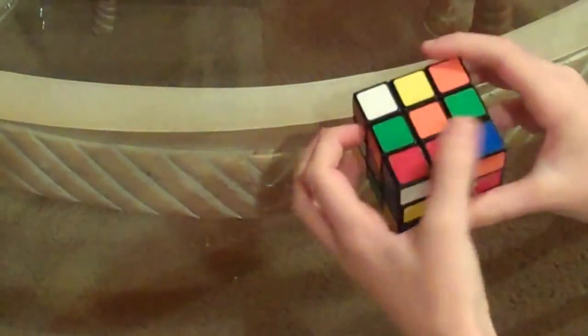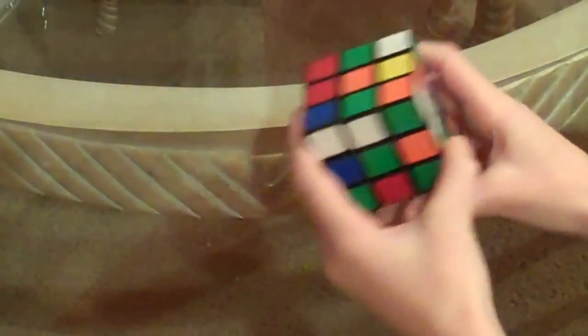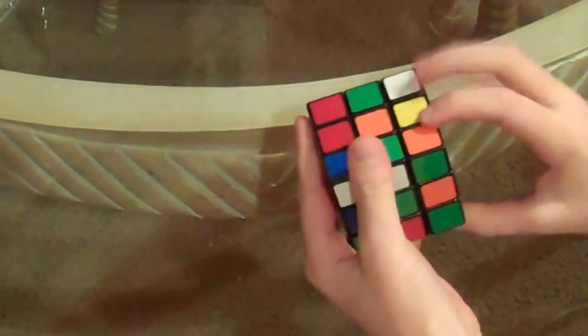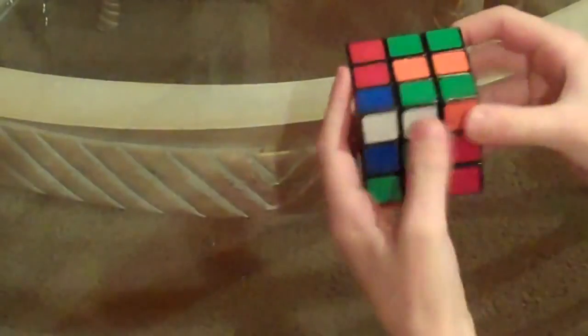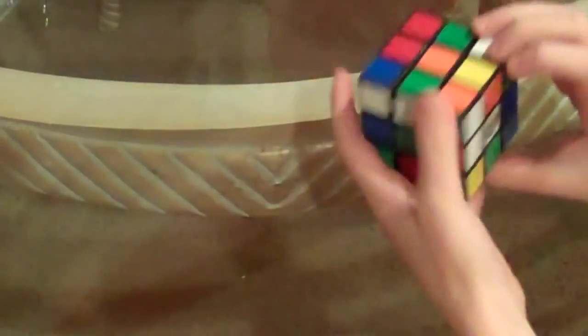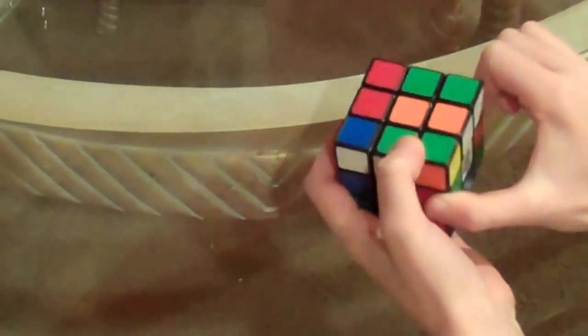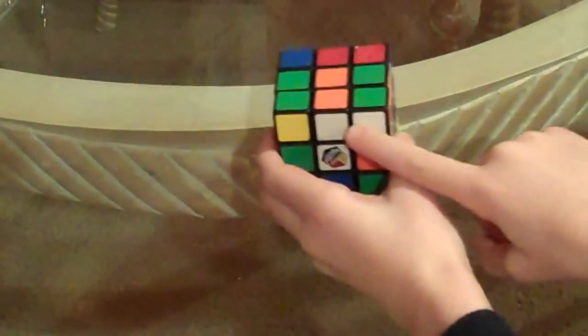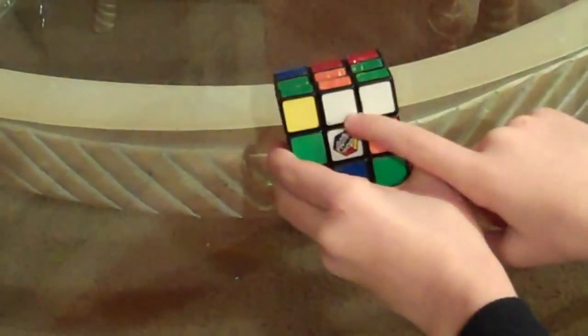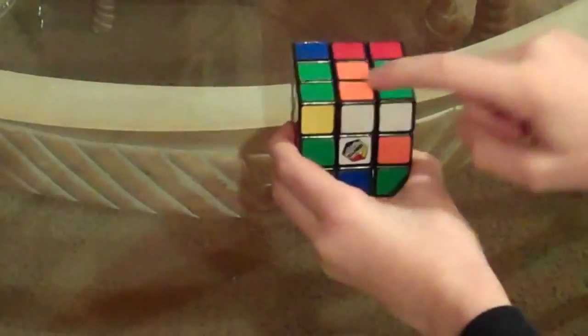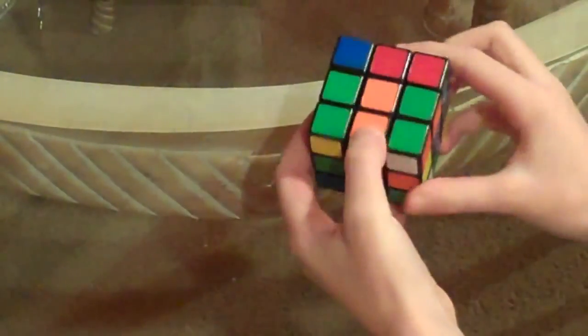See how orange is right here? Now see how this piece is here? Your goal is to get it like this. See how this was here and that's white right there, and orange is here? You want to go like that. See how it's lined up with this right here? So it's orange, white, white. That's correct.